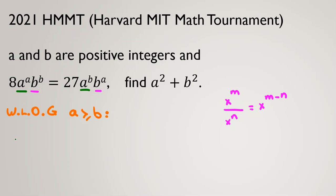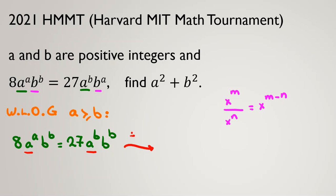Let's rewrite our equation: 8 times a to the a times b to the b equals 27 times a to the b times b to the a. Now I want to divide — let's see, between powers a and b, the smaller power is b, so I divide by a to the b. Also, the other term is b to the a, not b to the b — let me correct that. It is b to the a.